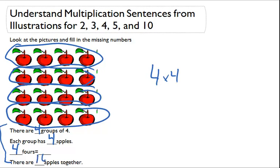So that's 16 apples together. So 4 4's equals 16, which is the same as 4 times 4 equals 16.